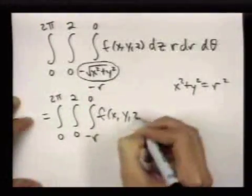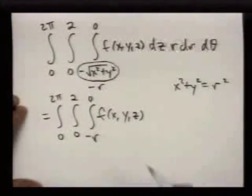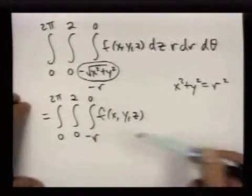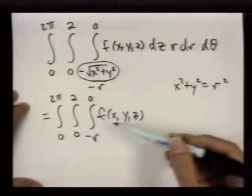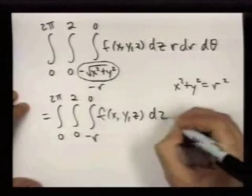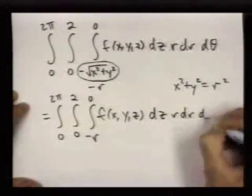Well, I'm writing f(x, y, z), but we can really think of f as a function of r, θ, and z because x and y and r and θ are interchangeable in some sense.